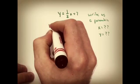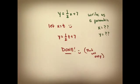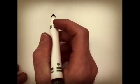If I give you a slope-intercept form and say, hey, write as a parametric, you can be real slick about it. Let x equal t. Now y equals 1 half t plus 7.